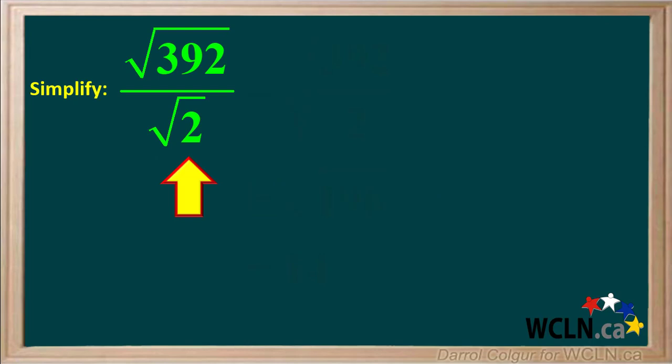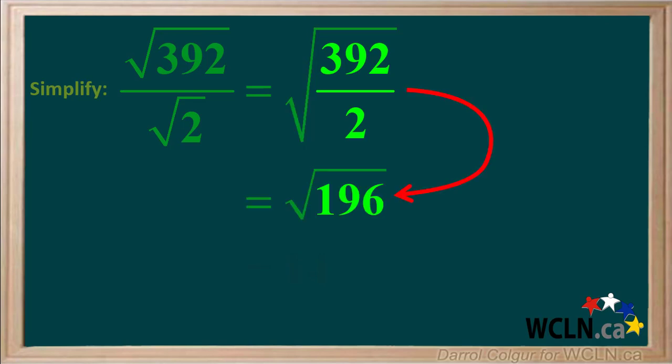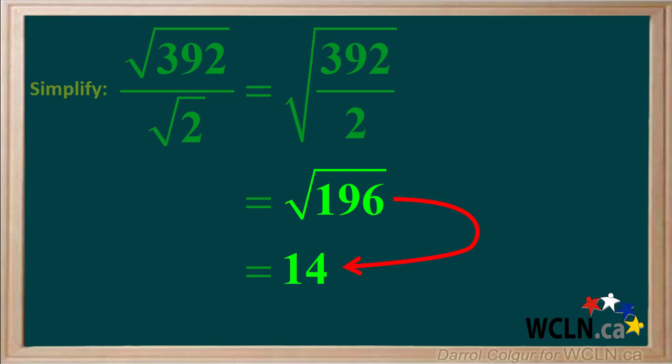Sometimes when dividing radicals, we end up with a perfect square. For example, we're asked to divide the square root of 392 by the square root of 2. The square root of 392 divided by the square root of 2 equals the square root of 392 divided by 2. 392 divided by 2 is 196, which is a perfect square, and the square root of 196 is 14. So 14 is our final answer.